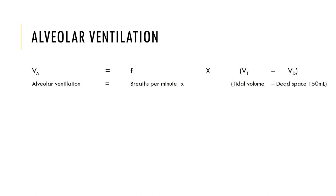Alveolar ventilation is the amount of air reaching the alveoli each minute. It is less than the respiratory minute volume because some air never reaches the alveoli but remains in the conducting zone — known as anatomical dead space, which at rest amounts to roughly 150 mL of the 500 mL tidal volume not reaching the alveoli. Alveolar ventilation is calculated by the number of breaths per minute times the tidal volume minus the anatomical dead space.